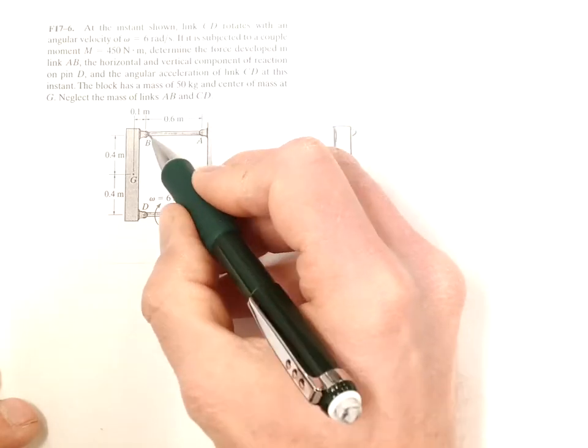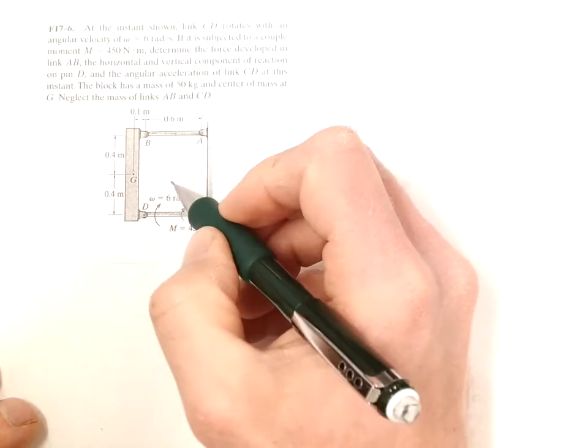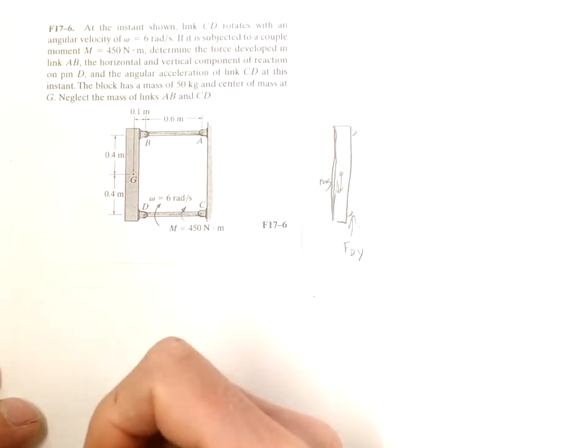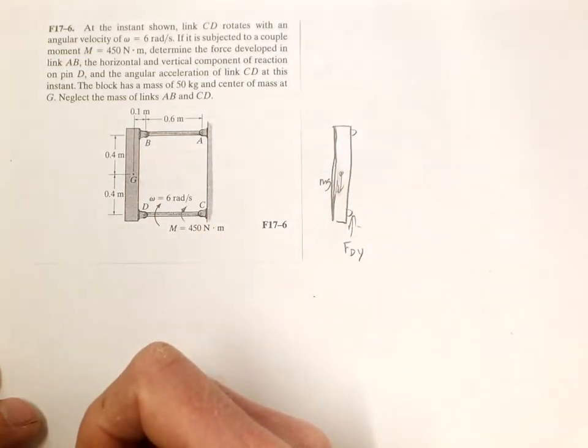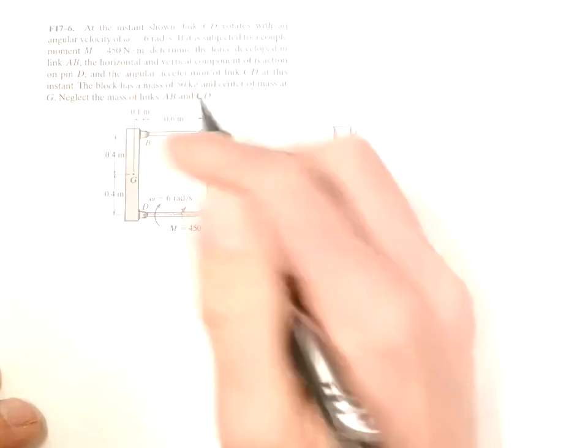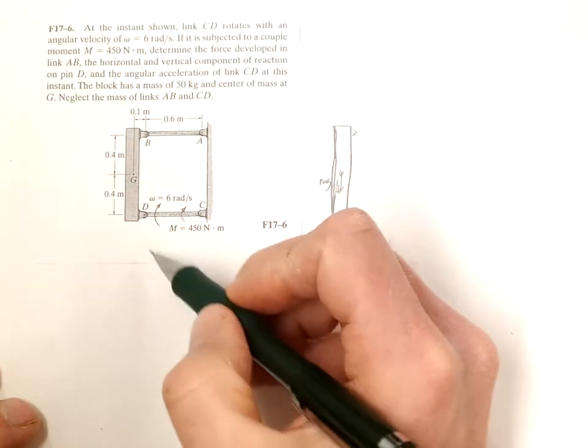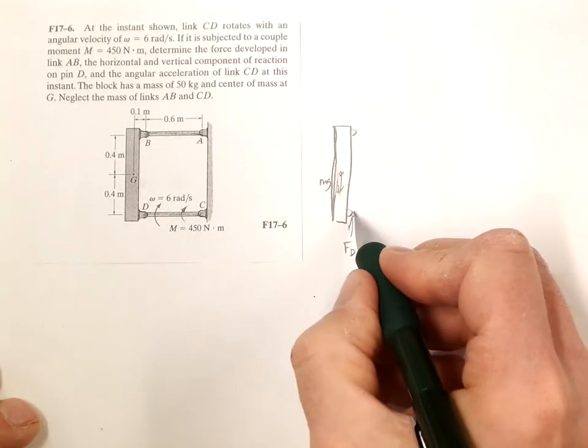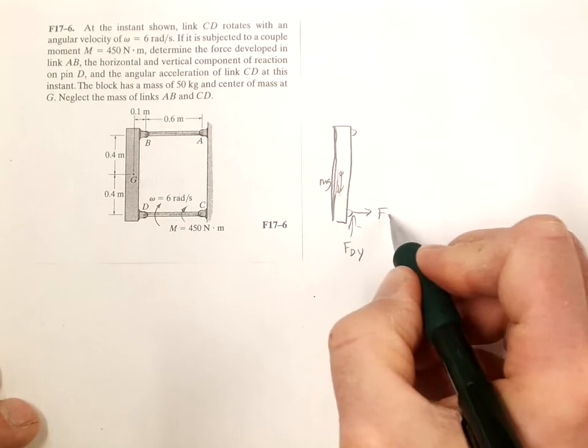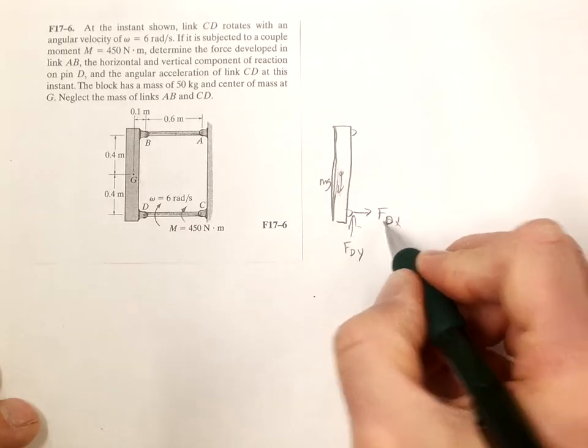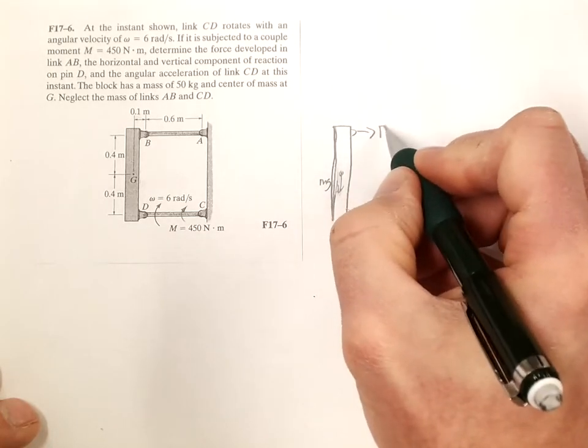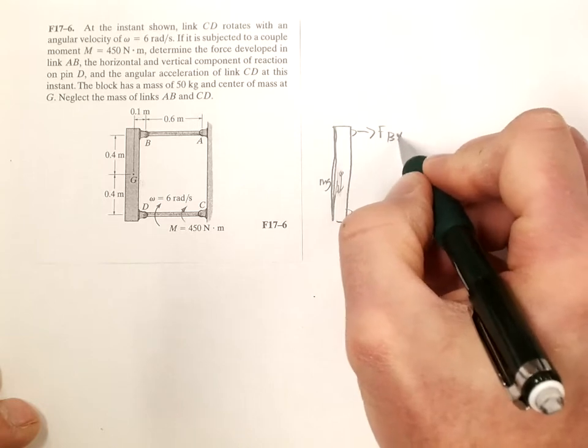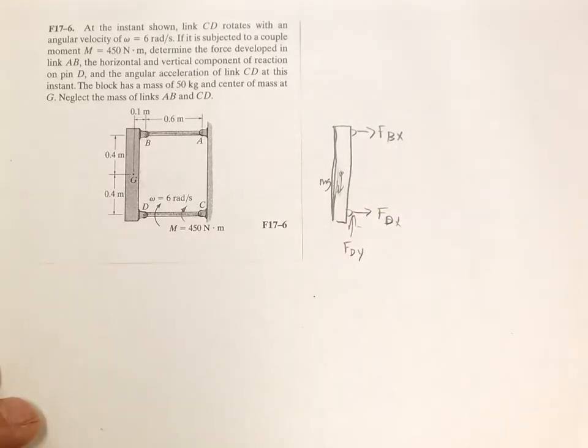This link is not pushing up, it's just riding, so it's not going to cause a force in the Y direction of B. But since the whole thing is rotating around there will be a centripetal force, so an FDX here and an FBX here.